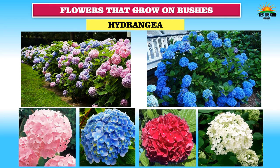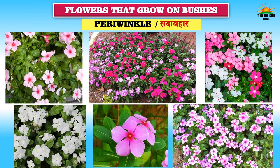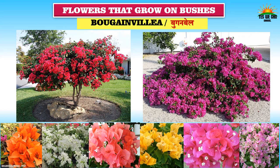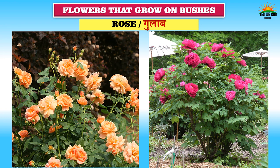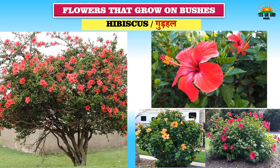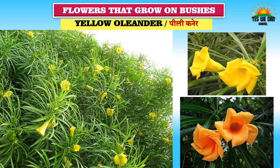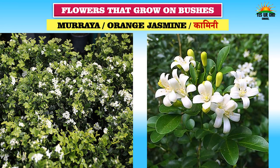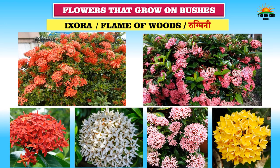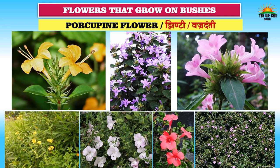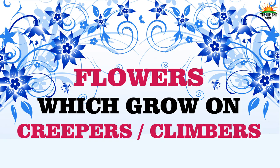Now let's see some flowers which grow on bushes. Hydrangea, which blooms in various colors — pink, blue, dark pink, white. Periwinkle, called Sadabahar in Hindi. Bougainvillea, called Bugan Bel in Hindi. Rose, called Gulab; Hibiscus, called Gudhal; Oleander, called Kaner; Yellow Oleander, called Pili Kaner; Murraya or orange jasmine, called Kamini; Ixora or flame of woods, called Rugmini; and porcupine flower, called Jhinti or Vajradanti in Hindi.